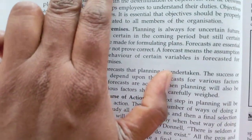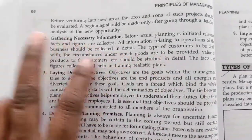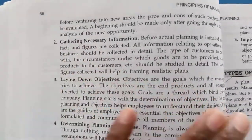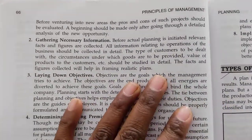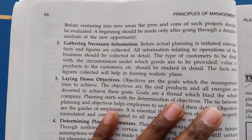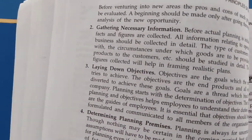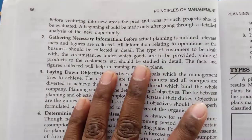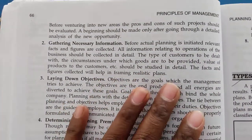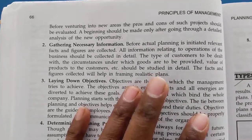The next step is gathering necessary information. Regarding the business planning we are making, we have to gather the information about which type of business we want to start.